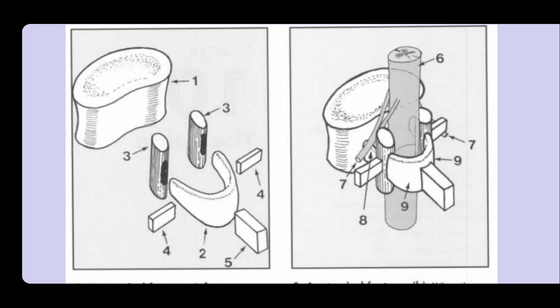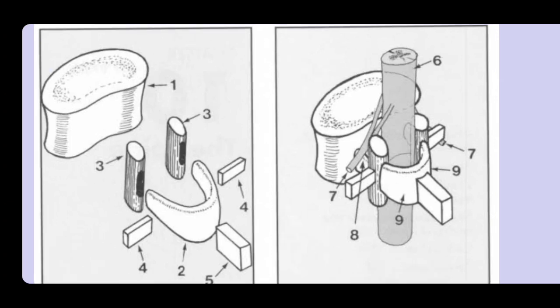Facet joints are formed on both posterior sides between two vertebrae. On the anterior part, between the vertebral bodies, is a strong cushion called the intervertebral disc, consisting of annulus fibrosus and nucleus pulposus located at the center. The annulus fibrosus is made of fibrous tissue protecting the nucleus pulposus inside. The vertebral column also forms the vertebral canal in which the spinal cord is located.